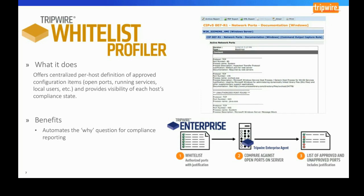Here's where Whitelist Profiler comes in. In a CSV file, you codify the authorized ports for your environment and associated services, including description, documentation links, justification, sign-off, and whatever fields you want to provide context for why that port is useful and necessary. You also specify in this file which systems this port and service are appropriate for.